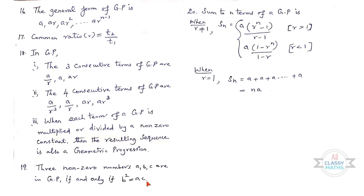Twentieth one: Sum to n terms of a GP — there are two formulas. When r ≠ 1: Sn = a(r^n − 1)/(r − 1) when r > 1, and also Sn = a(1 − r^n)/(1 − r) when r < 1. When r = 1, Sn = a + a + a... (n times), so Sn = na.